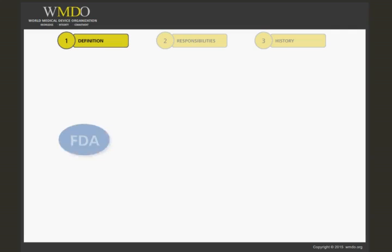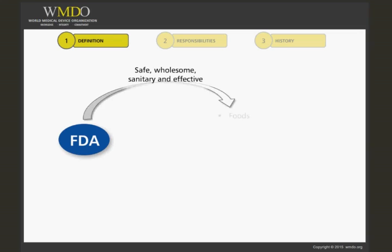What does the FDA regulate? FDA is the U.S. federal agency responsible for ensuring that foods are safe, wholesome, and sanitary.